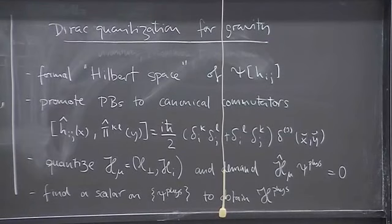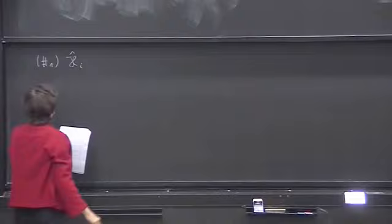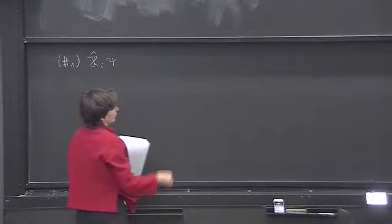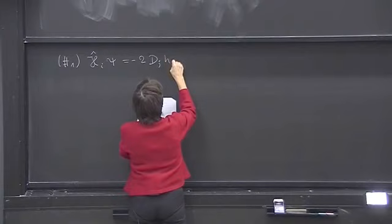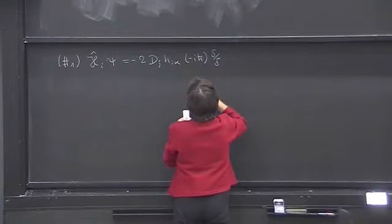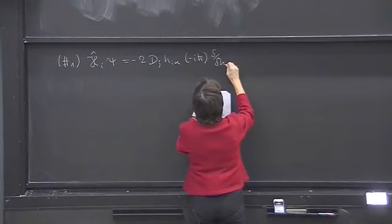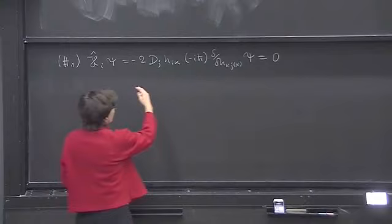What this amounts to for the four quantum constraints is the following: h i hat acting on a wave function that depends on the hijs is equal to minus 2 d j h i k minus i h bar, and now comes a differential operator, so that was exactly where I had a pi dependence classically that now becomes a partial functional differential on psi, and this is one of my Dirac conditions on the physical wave functions.